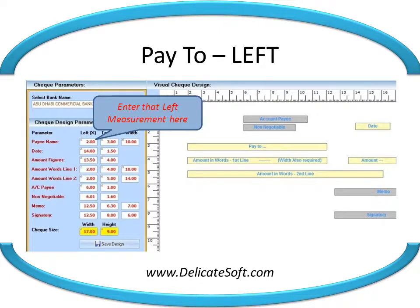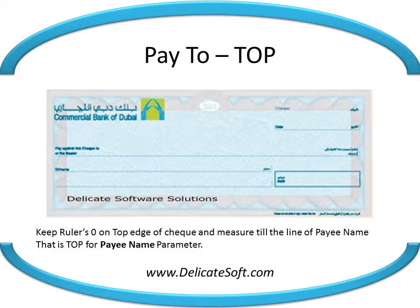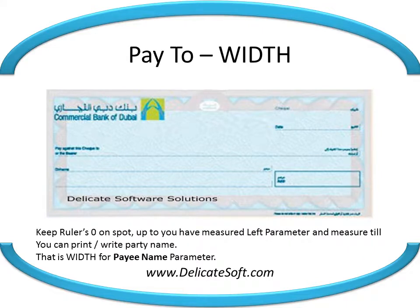Enter that measured left centimeters for party name here. Keep the ruler's zero on the top edge of the check and measure till the line of party name — that is the top parameter for party name. Then keep the ruler's zero on the spot up to where you measured the left parameter and measure till where you can print the party name — that is the width for party name parameter.